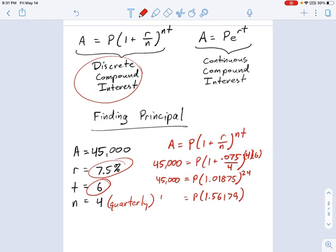Okay, so if I know that 45,000 equals P times this number over here, all I have to do is divide each side by that number, and I will get P by itself. This is just solving an equation. We've done this a lot of times before. So let's divide 45,000 divided by 1.56, and what I get is $28,813.07 is your initial investment.